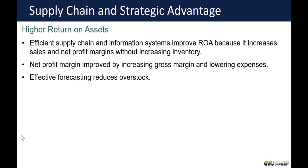When you manage the supply chain well, you're going to have a higher return on assets because you'll know what products are moving and selling. Your inventory turnover is going to go up, you'll be able to sell more and manage profit margin without increasing inventory levels. If we use good forecasting, avoid overstock, and aren't keeping as much in the back room, all these things help us have a better return on assets long-term.